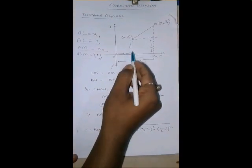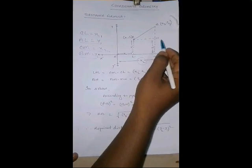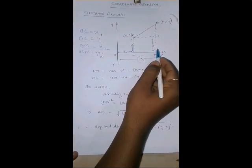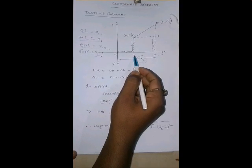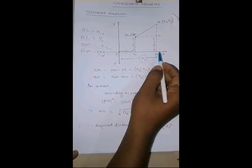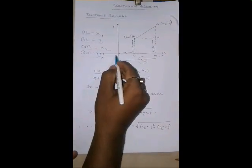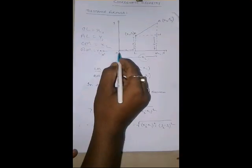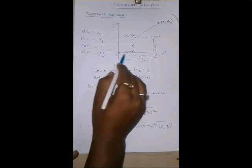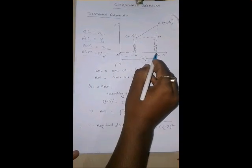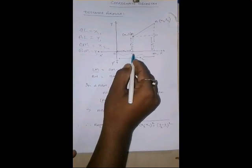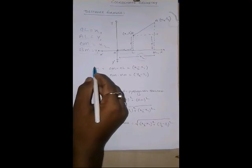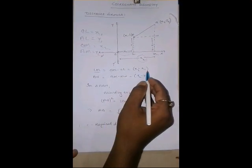And we have to find AB. So, you see here in the graph that if AL is y1, then MN will be also y1, because these two distances are equal from the graph. And if OL is x1, and I need the value of LM, then LM equal to OM minus OL. So, the coordinate of LM or the distance of LM will be x2 minus x1.